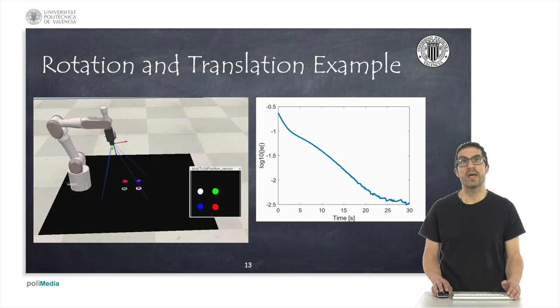And in this third example, I have moved the robot so that it must perform a simultaneous translation and rotation. Specifically, the image is rotated 90 degrees, but it also has some displacement, so we detect the blobs or the objects at the bottom left corner of the image.